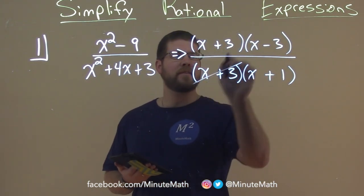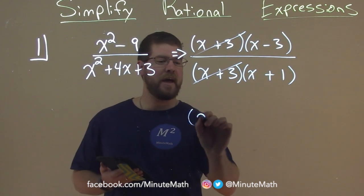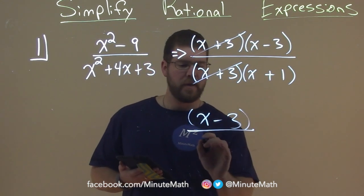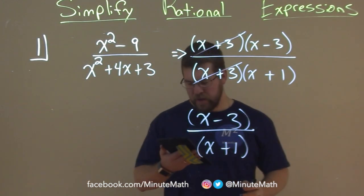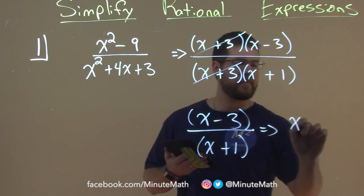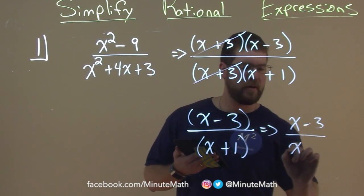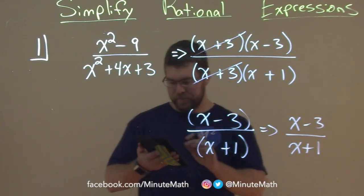They will cancel each other out, and so what we're left with is just an x minus 3 in the numerator and an x plus 1 in the denominator, which again you can write, which most people do, is just x minus 3 over x plus 1, and not have the parentheses there.